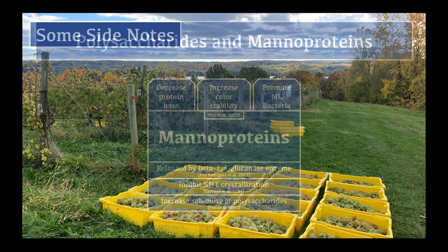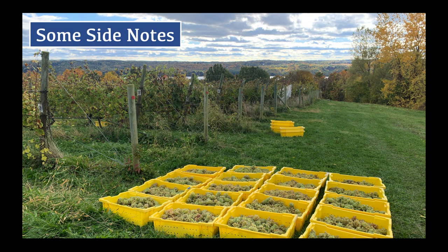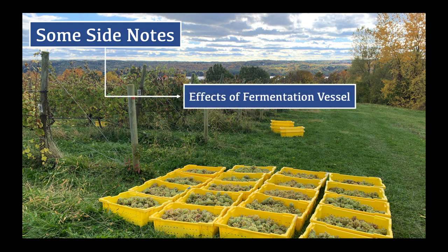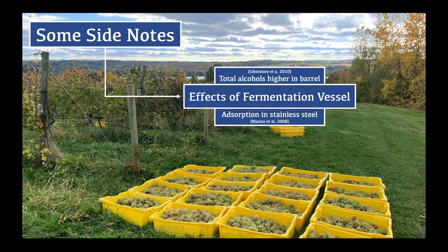The fermentation vessel may also play an important role in aging with lees. Total alcohols have been found to be higher in wines aged on lees in barrels as opposed to stainless steel tanks. Lees were suspected to have adsorbed alcohols in a white wine aged in stainless steel, while no adsorption was observed in a white wine aged in barrels. As a general rule, lees will take up non-polar volatiles and phenolic components.